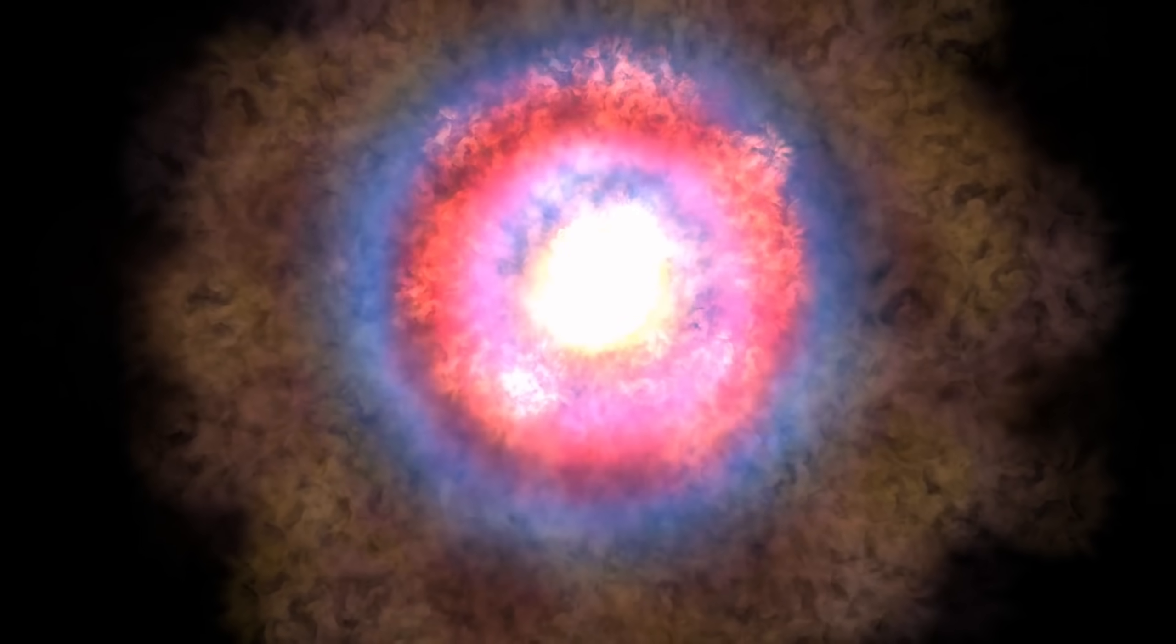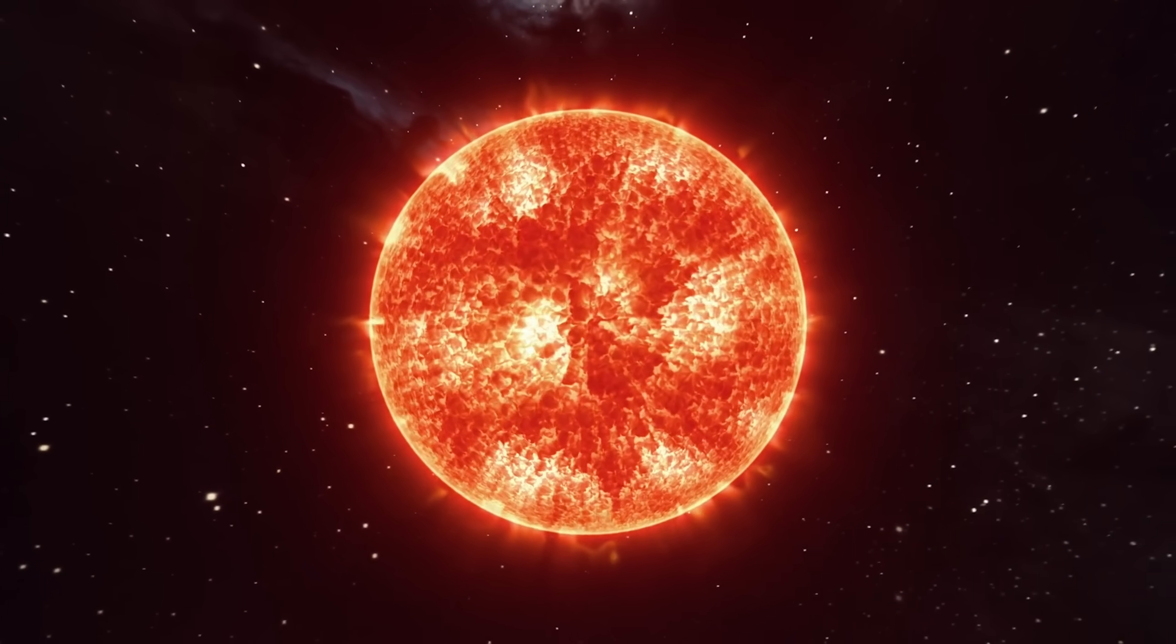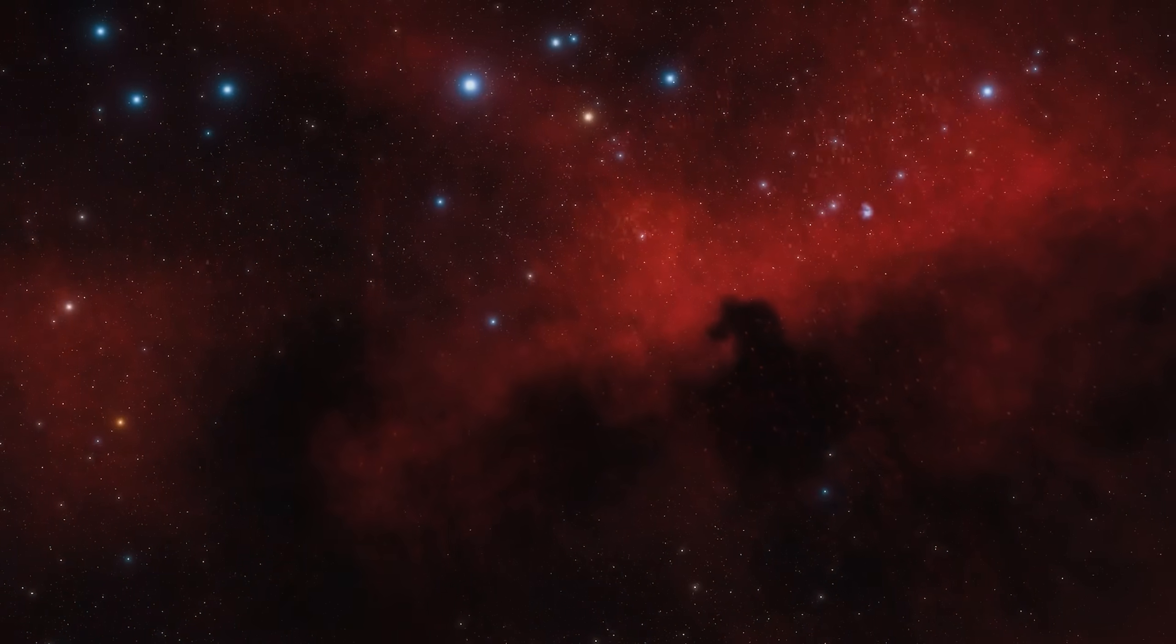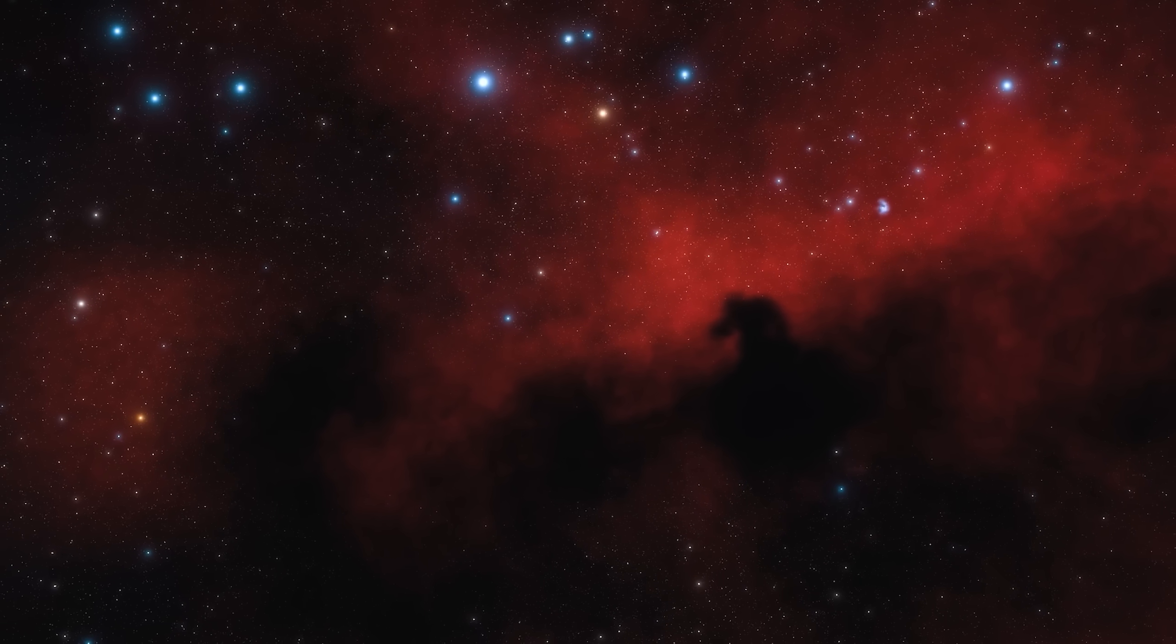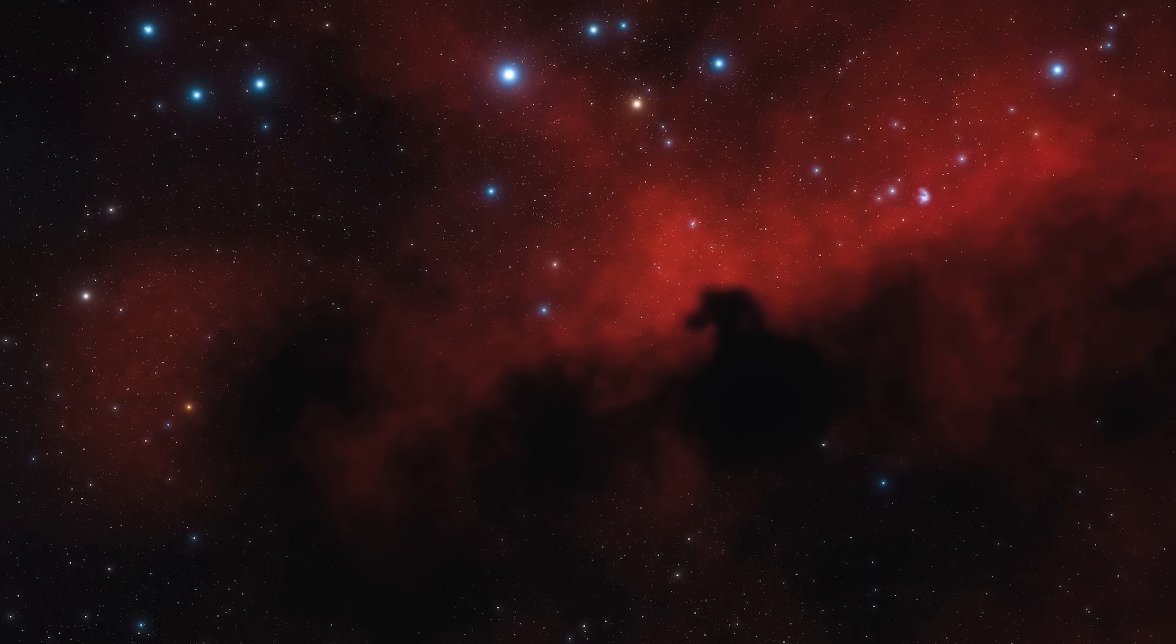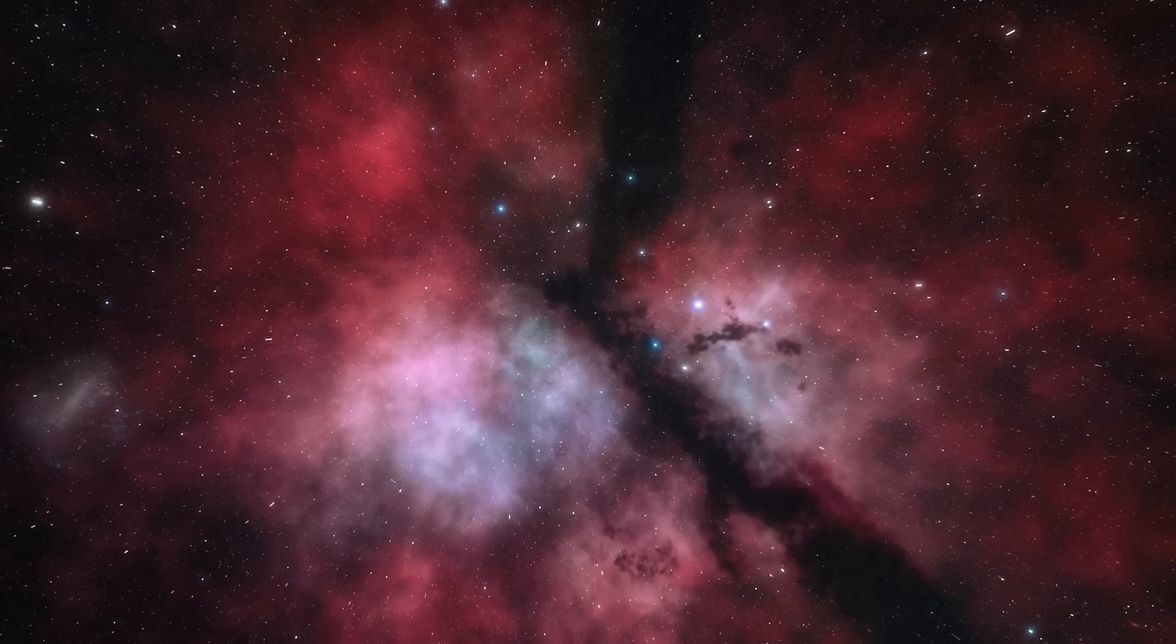In the case of supernovae, the intense explosion scatters heavy elements throughout space, which eventually cool and condense into dust grains. Similarly, red giants, as they expand and lose their outer layers, contribute to cosmic dust by slowly ejecting material into the interstellar medium. This dust can subsequently be incorporated into new stars, planets, and even life, making it a critical component of cosmic recycling. But cosmic dust is not just a byproduct of stellar evolution.